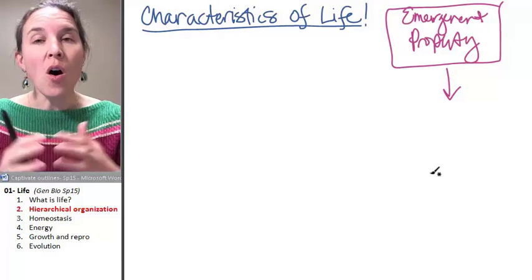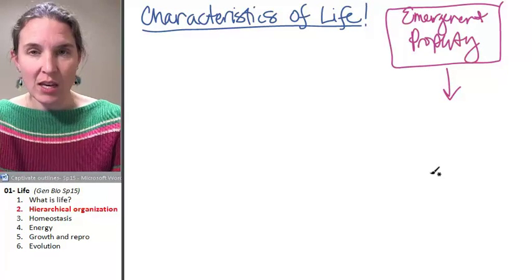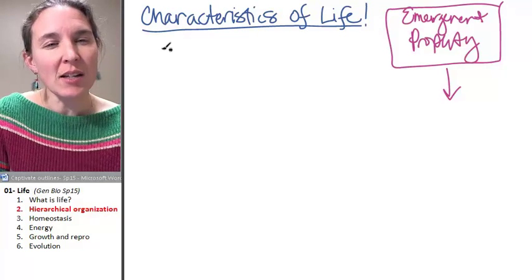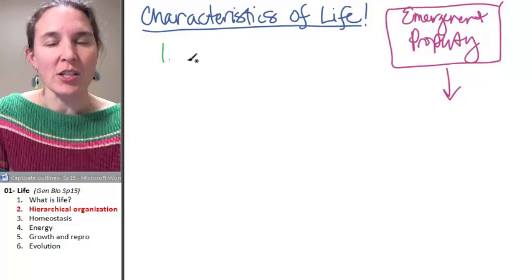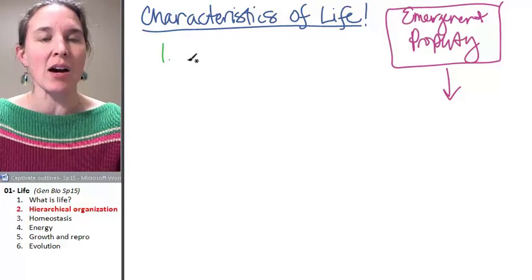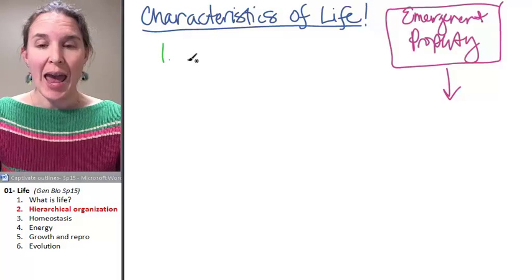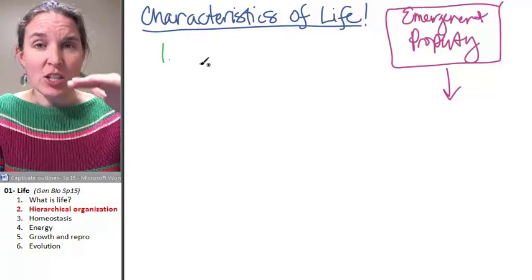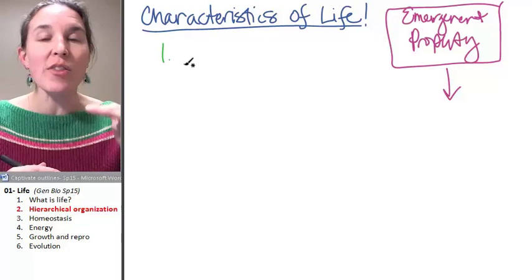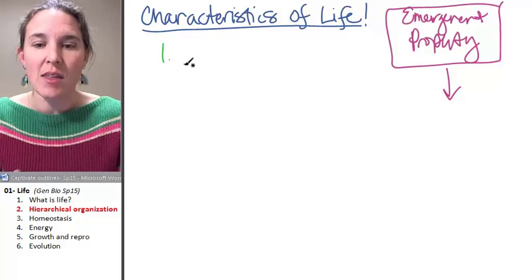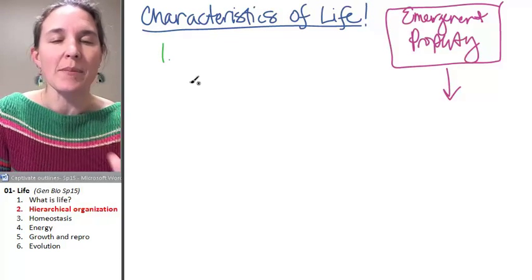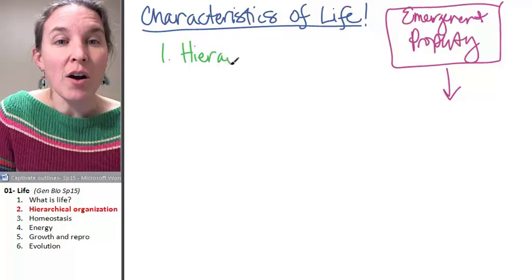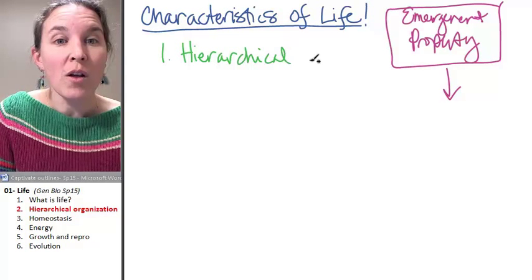The first characteristic that all living things exhibit is this concept of hierarchical organization. This is fundamental to understanding how life functions and why it works the way it does, because it's got these levels of organization. At each level, there are emergent properties that are characteristics of just that level. So let's write this down: hierarchical organization.